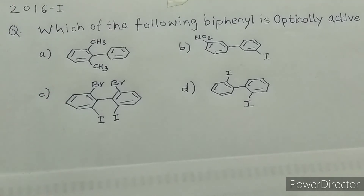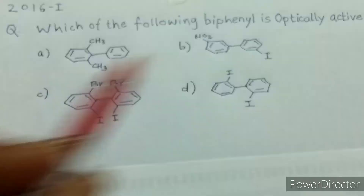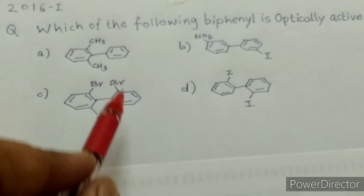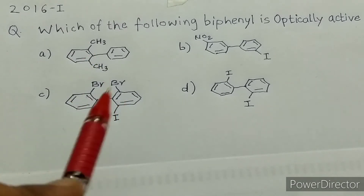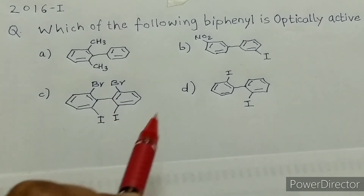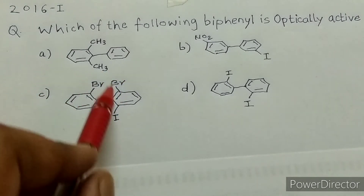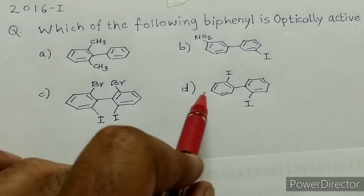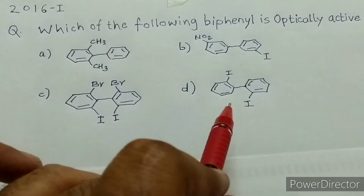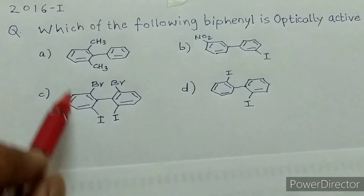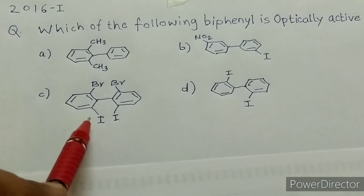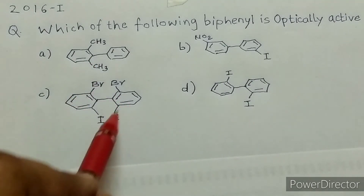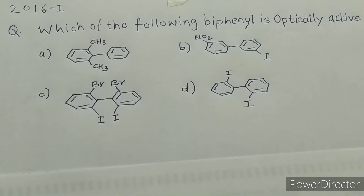Here is the super trick: when you come across such questions, the ortho-substituted biphenyl with bulkier groups is your answer — you can find the answer within three seconds. In option C, bulkier groups are present on the ortho position, so that is your answer. In option D, ortho substitution is present but there are no bulkier groups and overcrowding is not present. Overcrowding makes the molecule optically active. Therefore option C is optically active because bulkier groups and overcrowding are present on the ortho position.